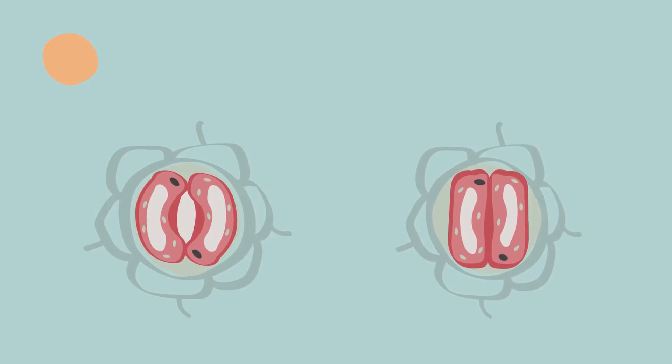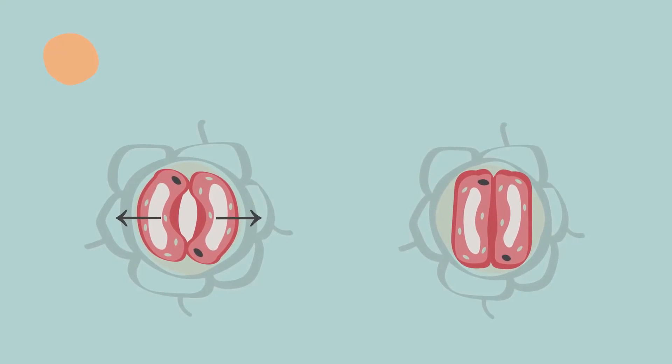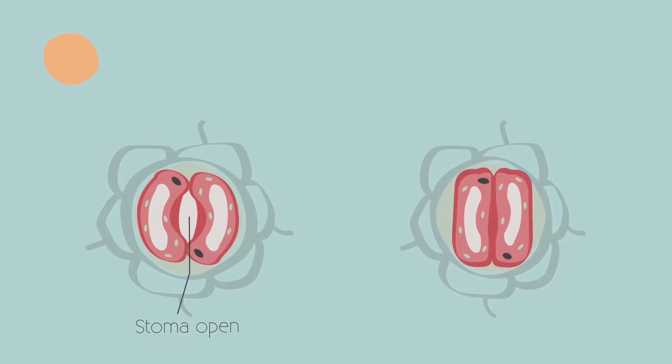When turgid, they bend more on the outside in two sausage shapes. This opens the stomata, and water can then be lost.